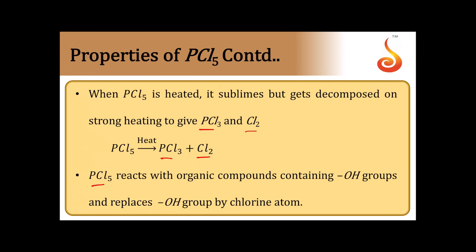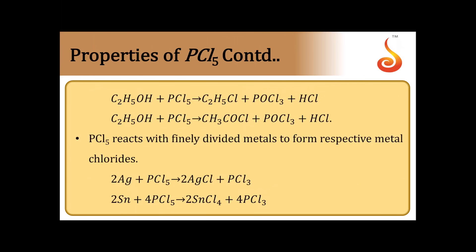Like PCl3, PCl5 also replaces the OH groups of organic compounds with Cl. So similar to PCl3, PCl5 also acts as a chlorinating agent. For example, ethyl alcohol (C2H5OH) reacts with PCl5 to give ethyl chloride. Similarly, acetic acid (CH3COOH) reacts with PCl5 and the OH group is replaced by Cl, giving acetyl chloride. In both cases the OH group is replaced by Cl, similar to the PCl3 reaction.